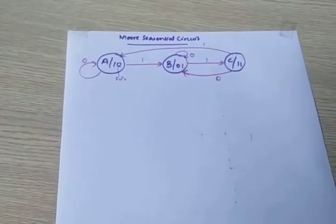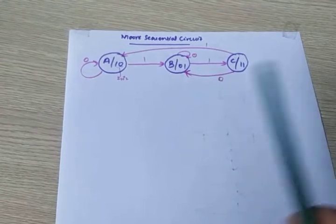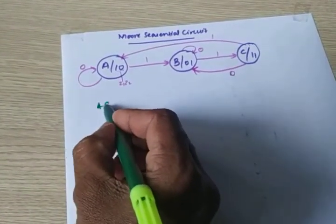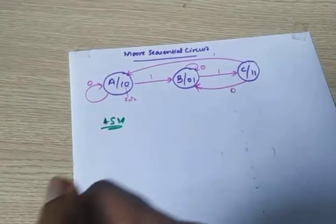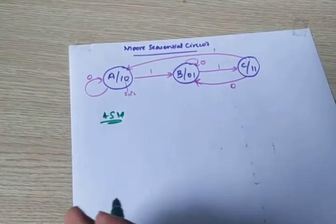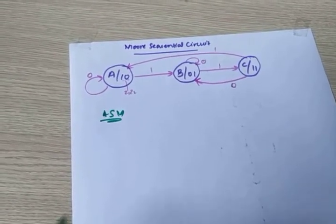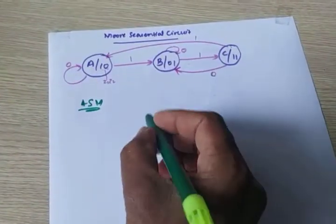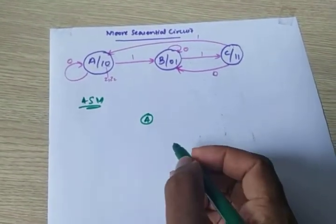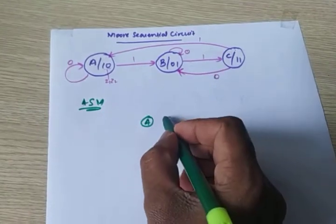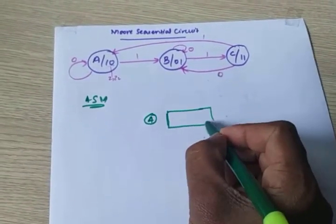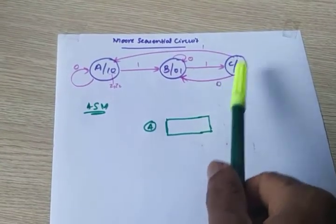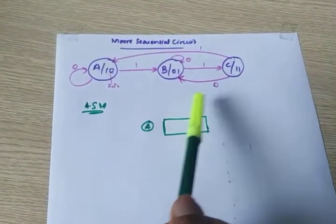Welcome to today's lecture. In this lecture I will discuss Moore sequential network to ASM conversion — how you can convert a Moore sequential network to its ASM chart. We have three states A, B, C, so we need three states A, B, C also in the ASM chart. ASM is an advanced version of this chart for the Moore circuit.